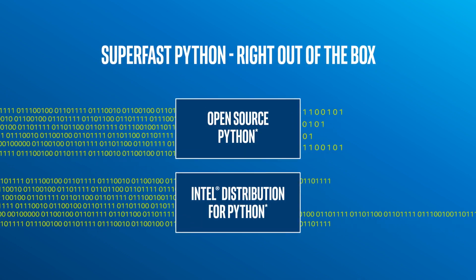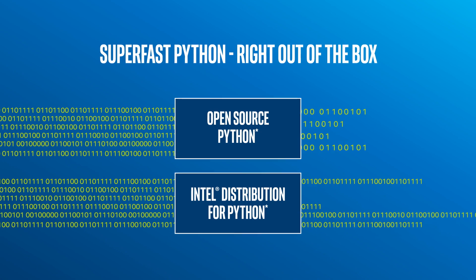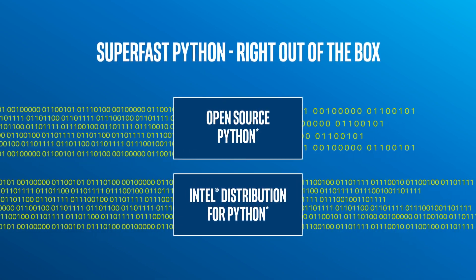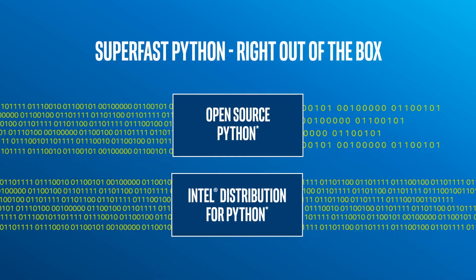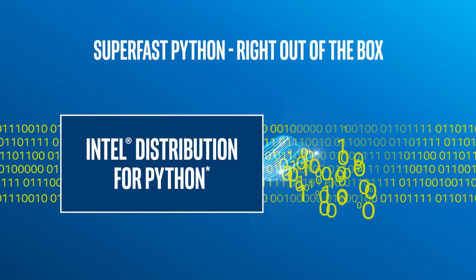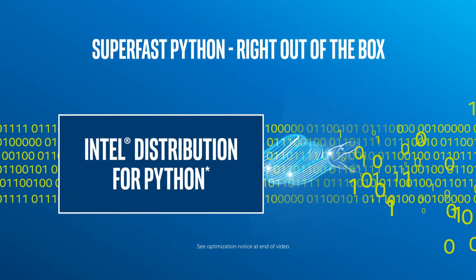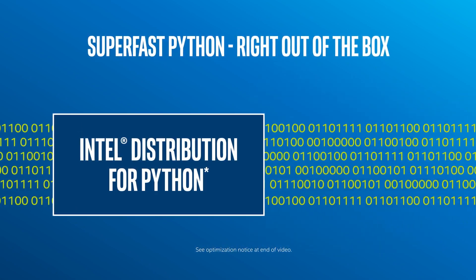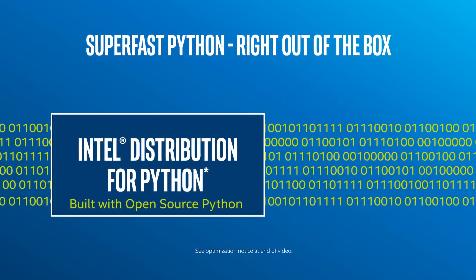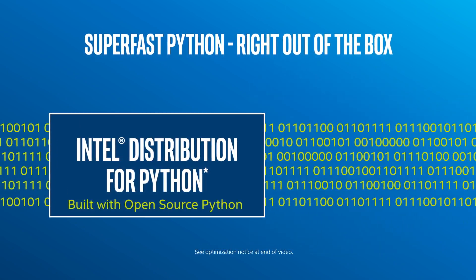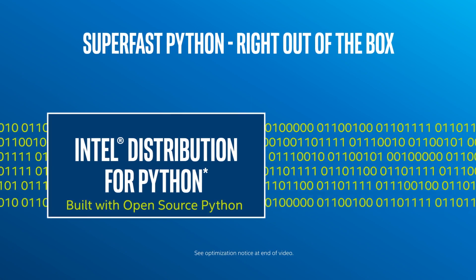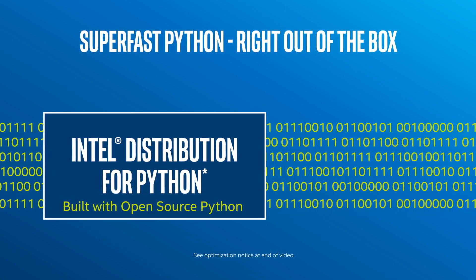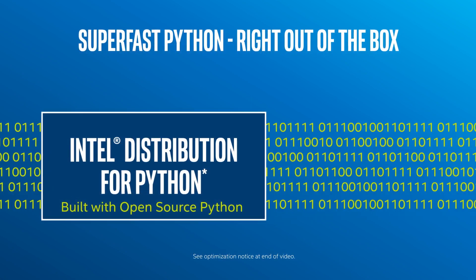The power and performance of Intel DAAL are also part of the Intel Distribution for Python, which delivers super-fast, accelerated Python application performance right out of the box. Intel Distribution for Python is built from open source Python, so any existing code runs without changes — it just runs faster.